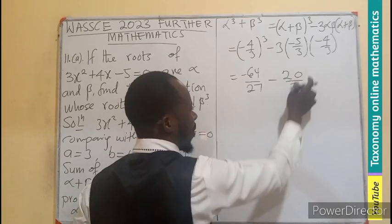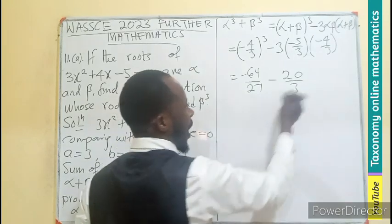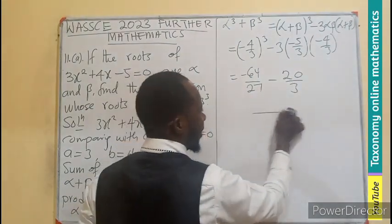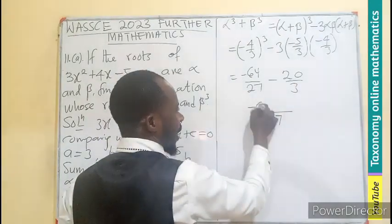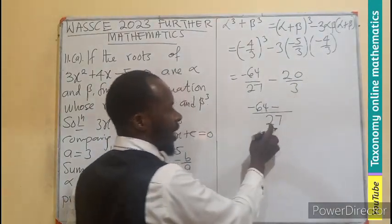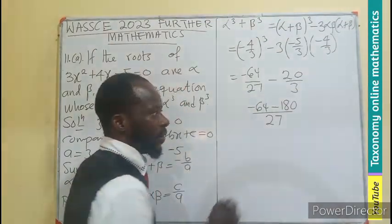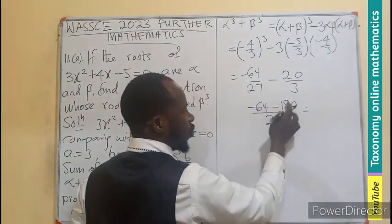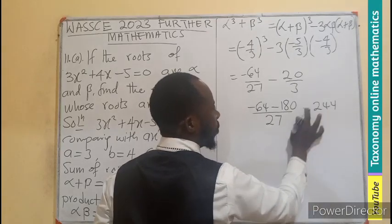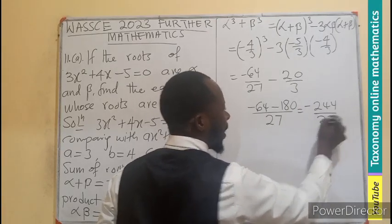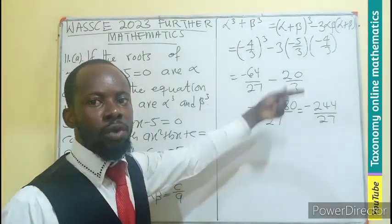So let me just take the LCM. 27 goes here 1, so -64. This goes here 9, 9 times 20 is 180. So let's perform that subtraction. If you add 20 to this, you get 200, then -244, still negative, divided by 27. So this becomes the sum of the new root, -244/27.